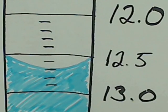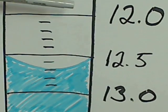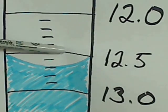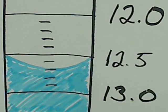That is how I would read this meniscus on a burette. Always start from the top number, count down, and then estimate that last one hundredth of a milliliter.